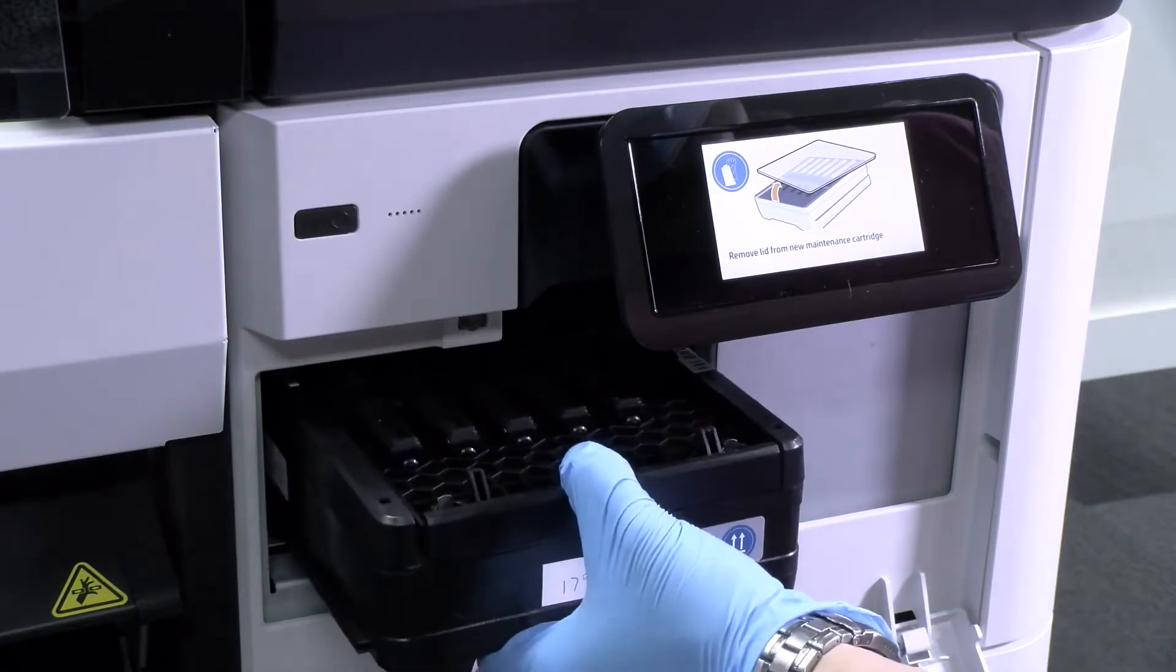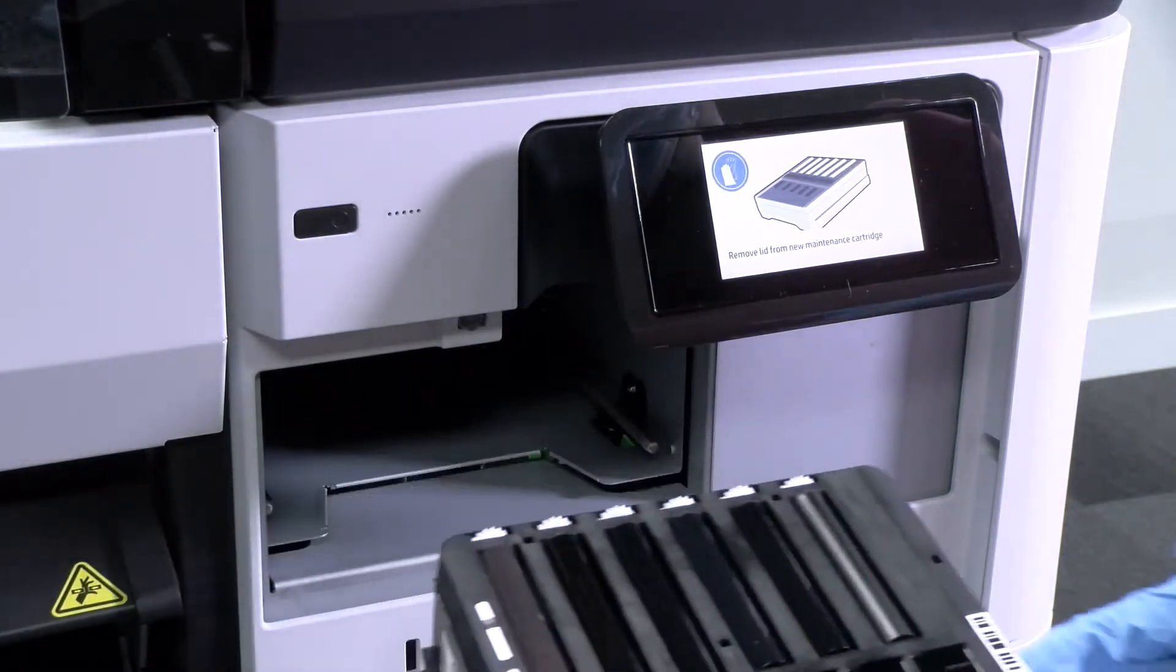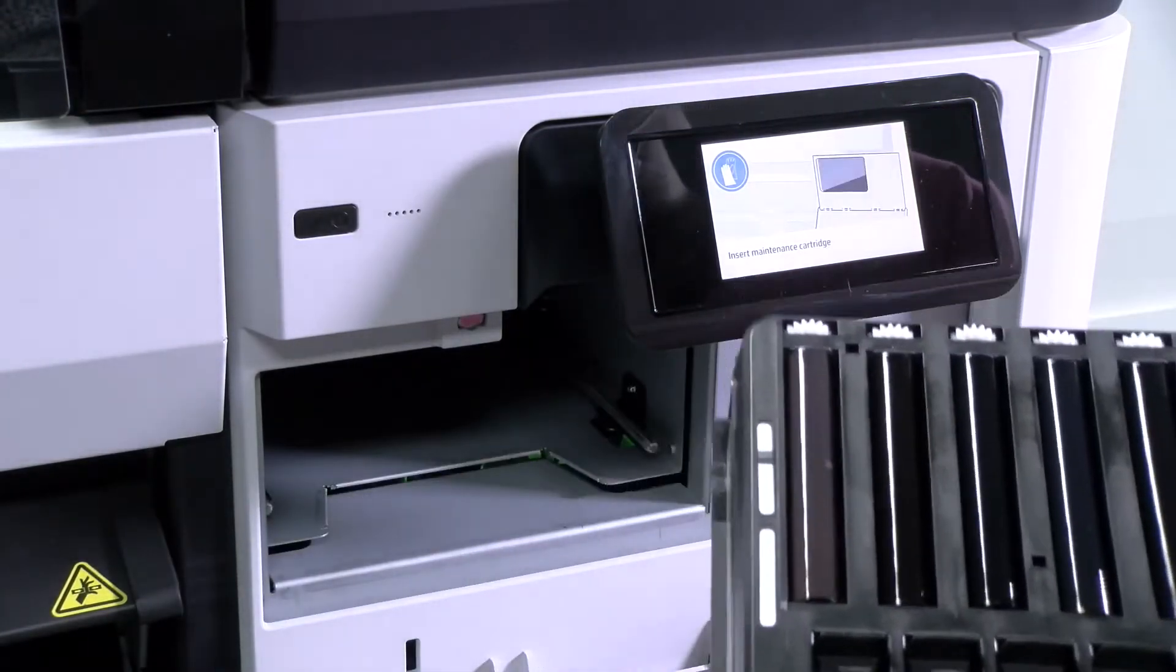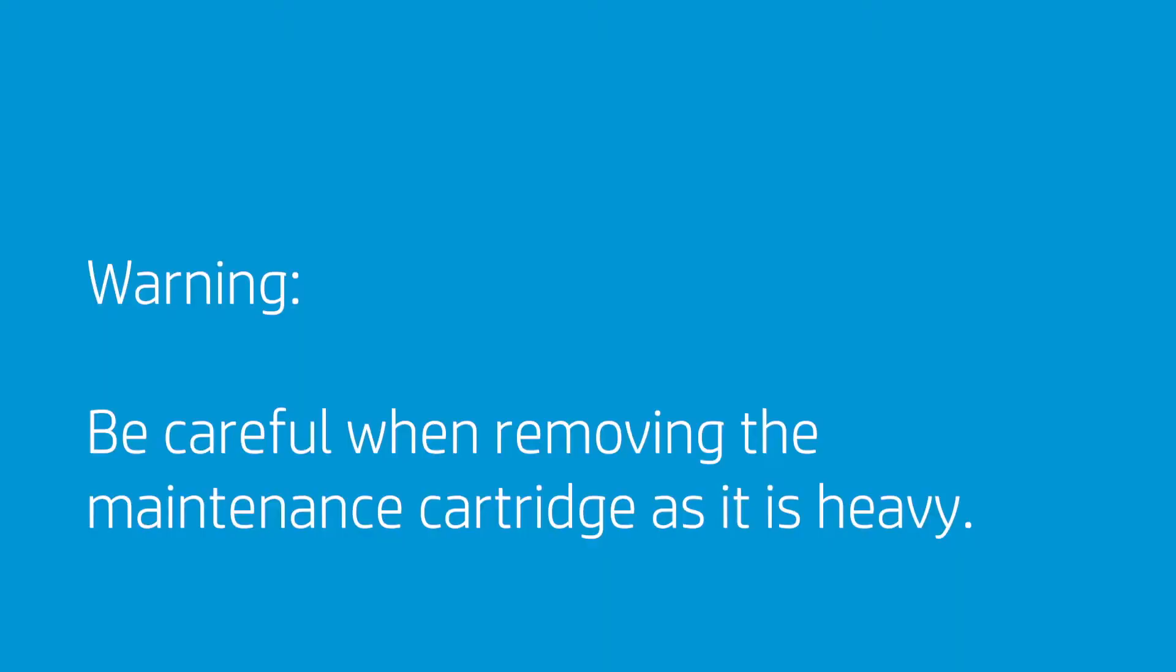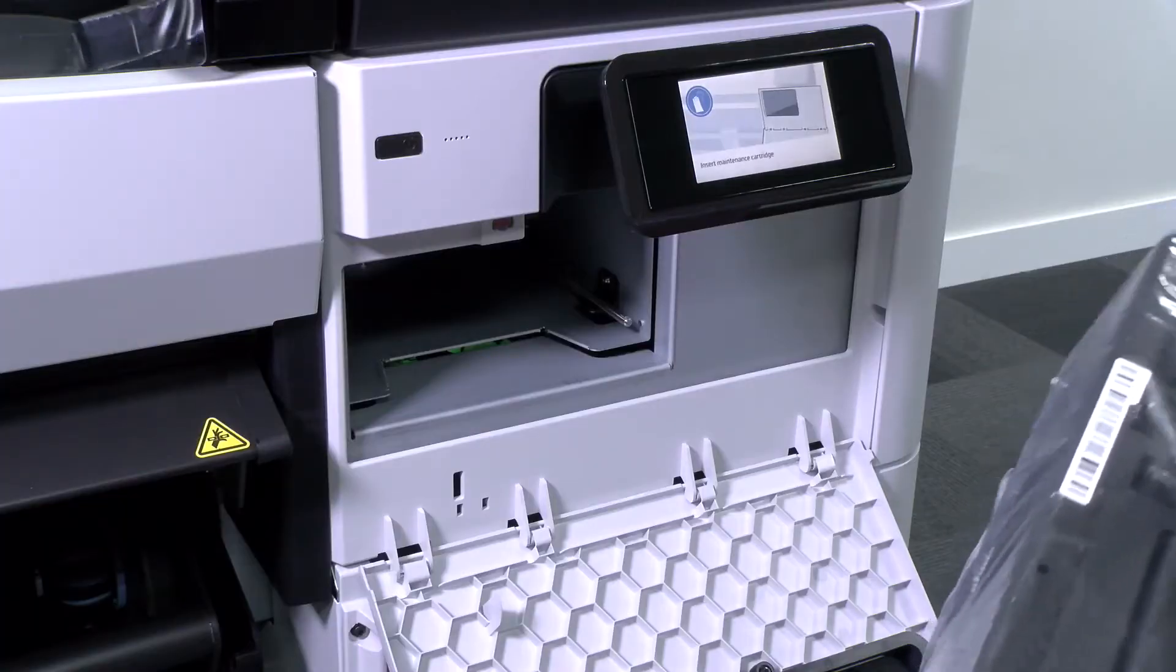To remove the cartridge, slide it just partly out, then hold it on each side and use both hands to fully remove it. Be careful when removing the maintenance cartridge as it is heavy. To avoid spills, slide the cartridge horizontally as it is full of ink.